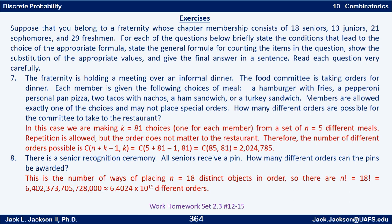Now we're replacing the food orders up here. We're making 81 choices, one for each member, from a set of n equals 5 meals. So k is 81, n is 5. Repetition is allowed, but the order doesn't matter to the restaurant. So the number of different possible orders is n plus k minus 1, choose k. So that's 5 plus 81 minus 1 is 85 choose 81, which is 2,024,785.